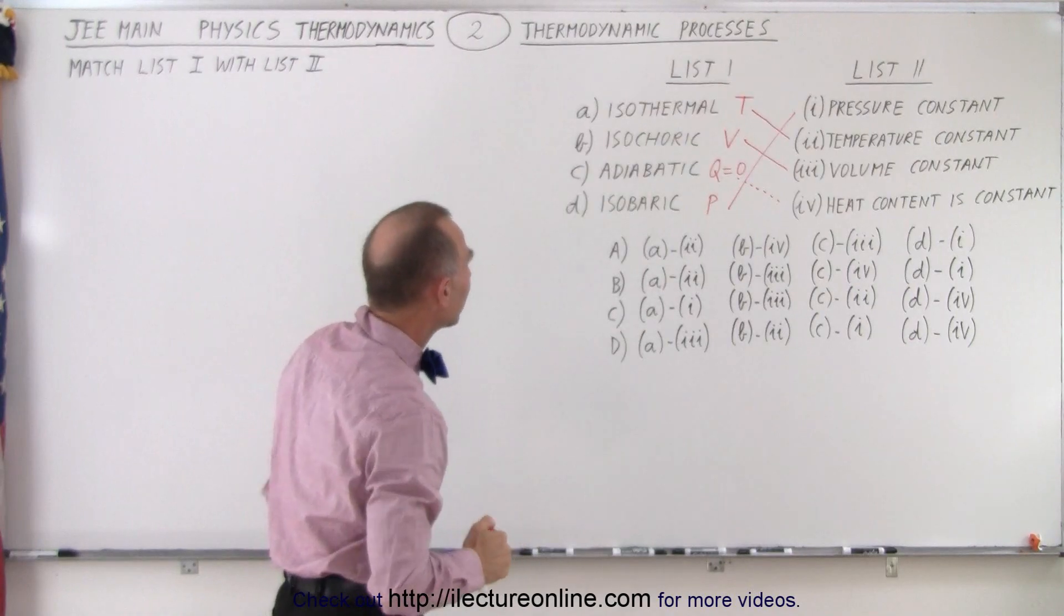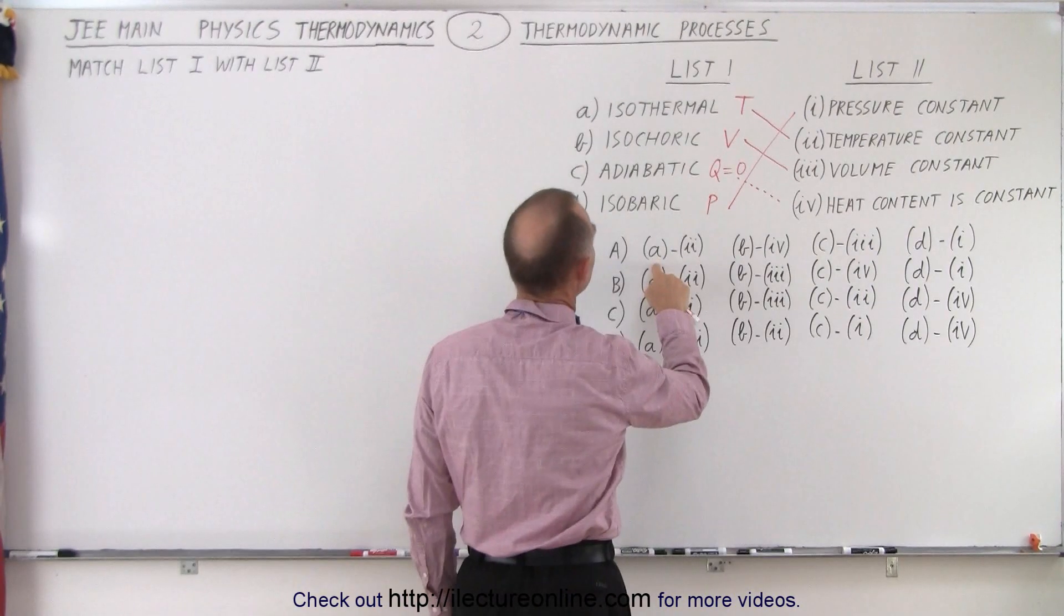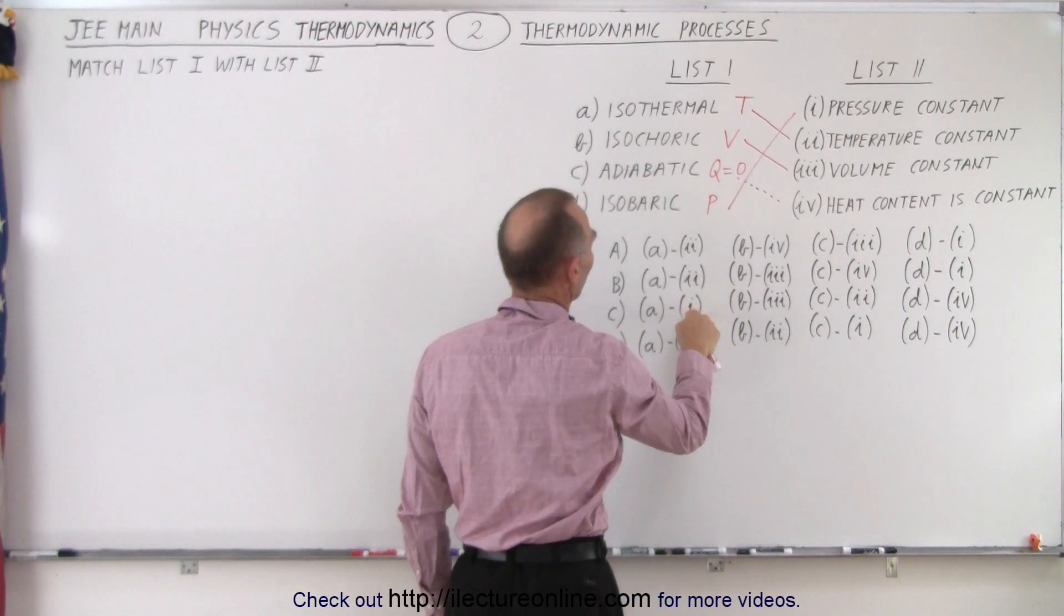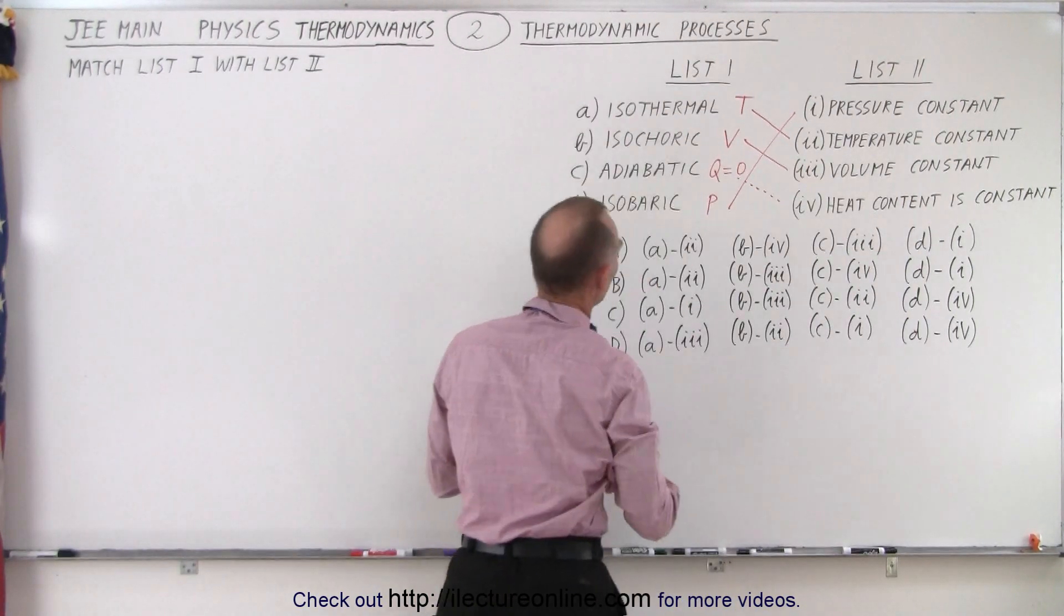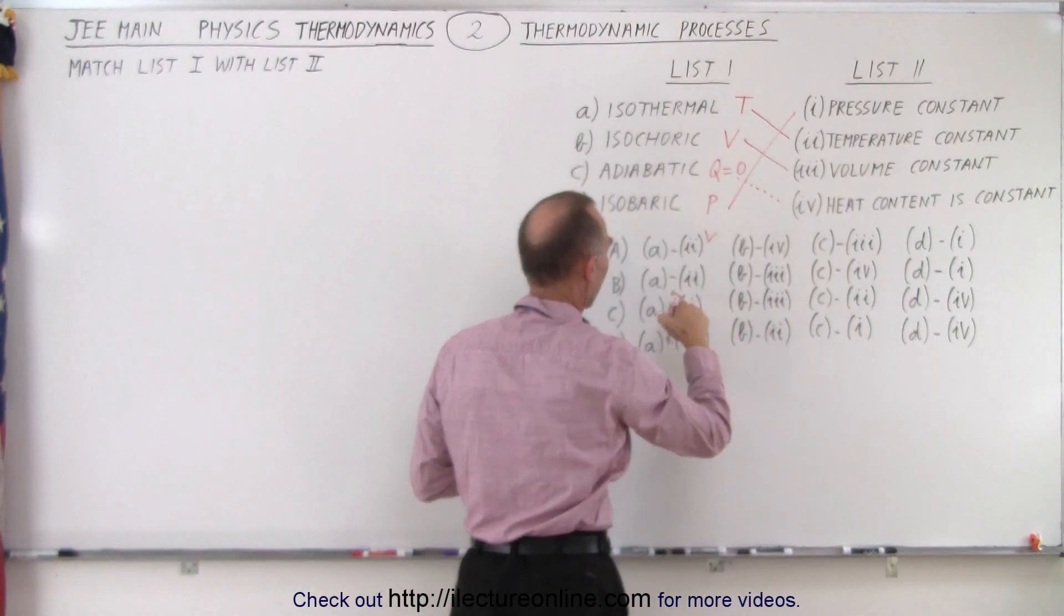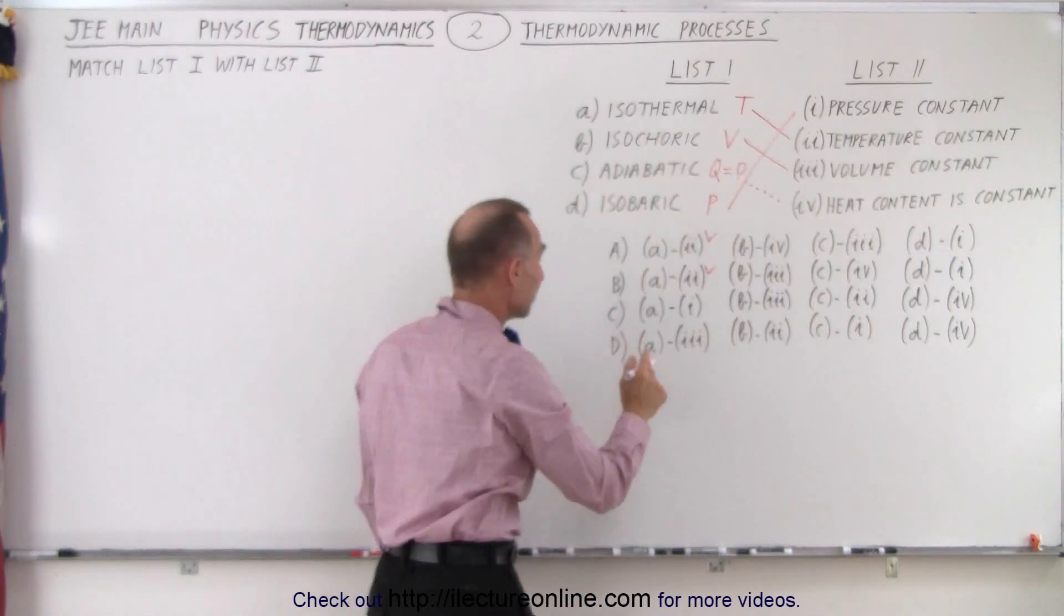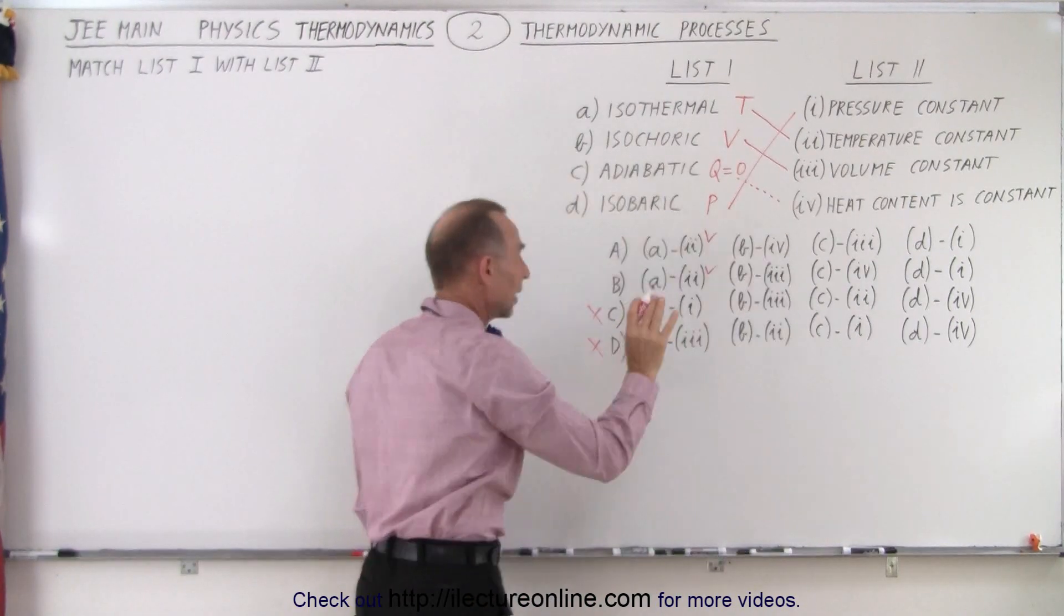So now what we're going to do is for A, isothermal, we have either two, one or three. Now isothermal matches up with two, so this one is correct and this one is correct. So at this point, we know that A or B can be correct, but C and D are already eliminated.